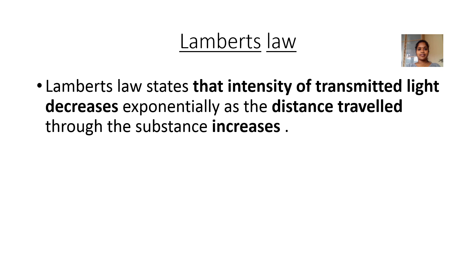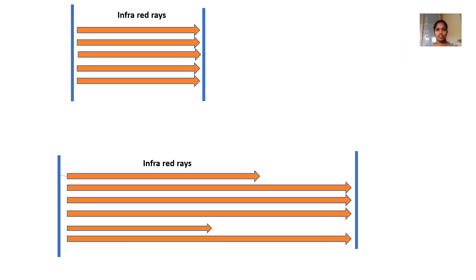What does Lambert's Law mean? Lambert's Law states that the intensity of the transmitted light decreases exponentially as the distance traveled through the substance increases. It is very logical. When the distance is less, as in the first figure, almost all the infrared rays will reach from one end to the other. But if the distance is more, as in the second picture, more light will get lost — not every ray will be received at the other end. More will get lost when the distance is more.